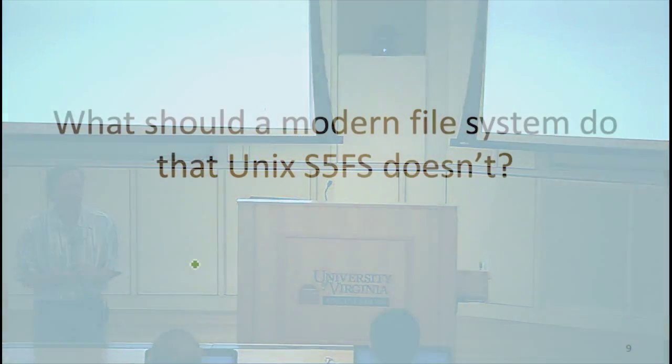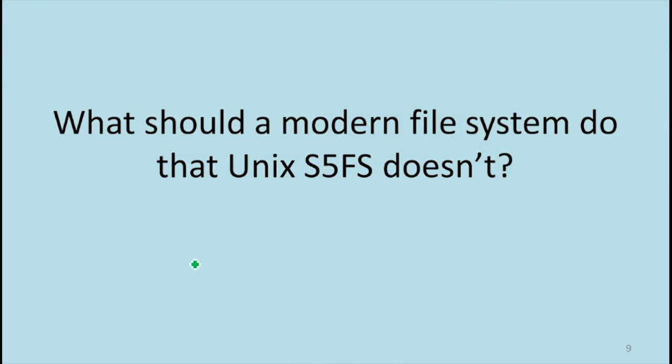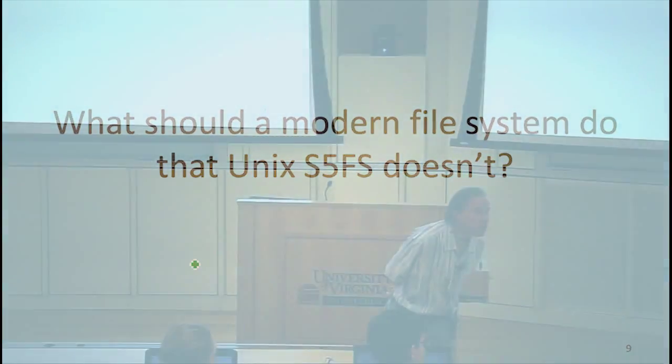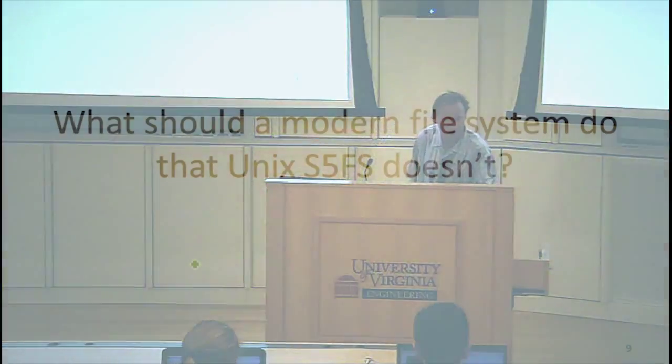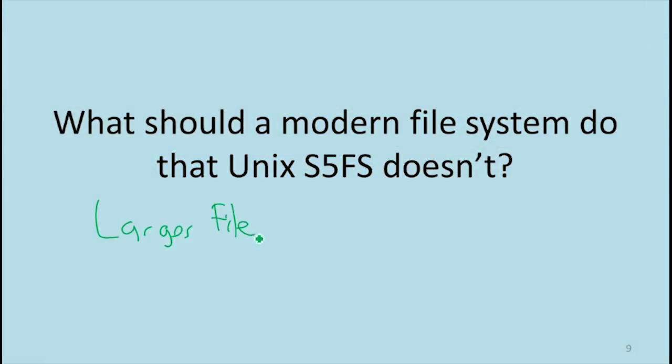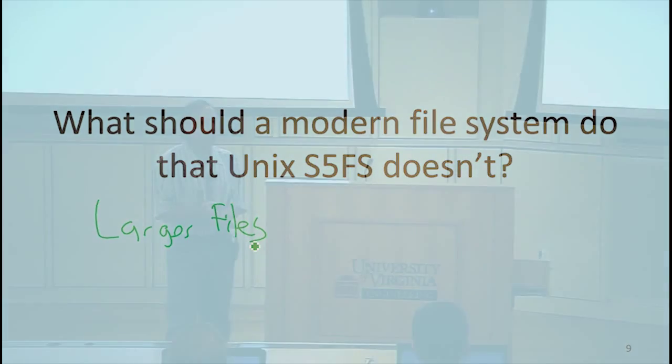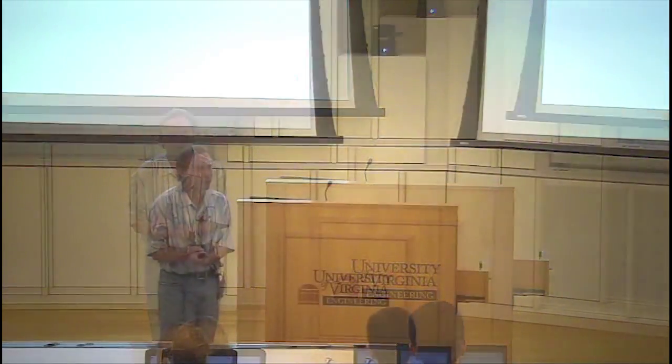What else do we want to do differently in a modern file system? What are properties that we desire that Unix System 5 would not do well on? Larger files — yes. The way Unix System 5 handled files, files over 10 blocks, or over 40 kilobytes, started to get slower to access, and there was some maximum file size. Probably still orders of many megabytes, but too small for the kinds of files we want to store today.